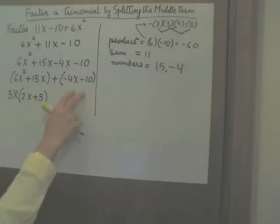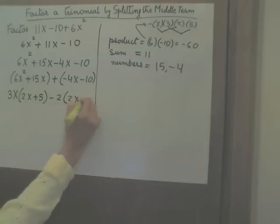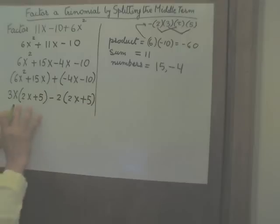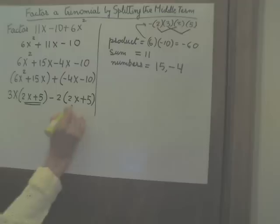In here, negative 2 is the common factor. So let's factor that out. Negative 2 times the quantity 2x plus 5. Note that between both groups, 2x plus 5 is common.